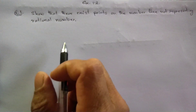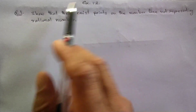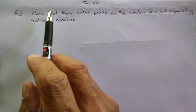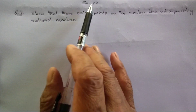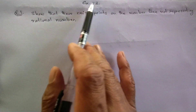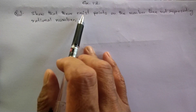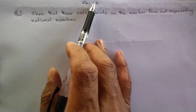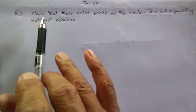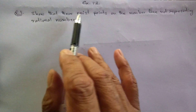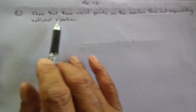In Class 9, I will show you a video of Exercise 1.2, question number 1. The exercise 1.2 will introduce the irrational number. There exists a point on the number line to represent the irrational number.